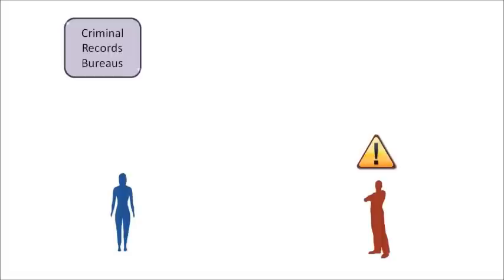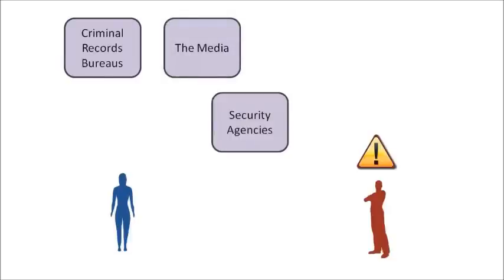Bill's crime against Alice will be noted by the various competing criminal records bureaus, and his identity will be made public in databases and in the media. Security agencies now consider Bill a higher risk for committing further crimes, and may take steps to protect their customers from him. Bill may find it difficult to find a security firm that will accept him as a customer, and if he does he may have to pay higher premiums. Because of his record, other business owners may refuse to employ or trade with him, and landowners may not permit him to enter their land.